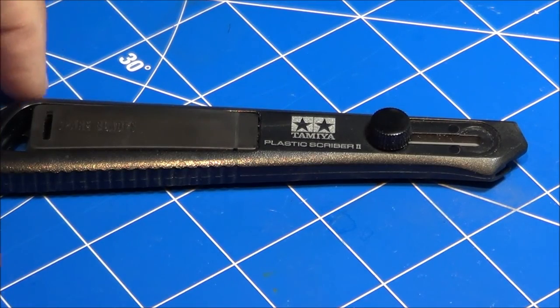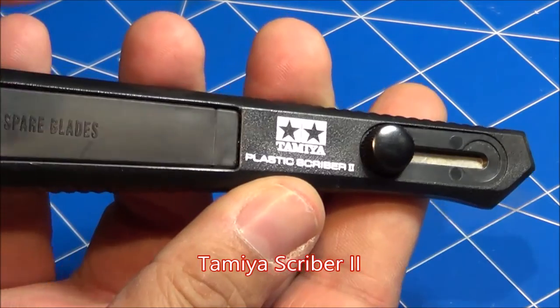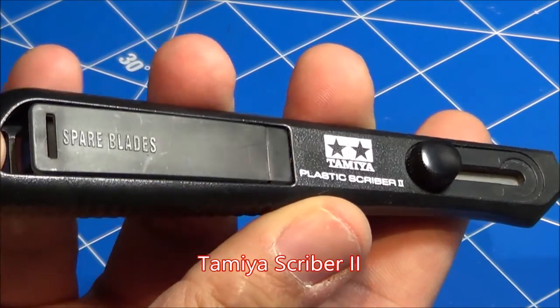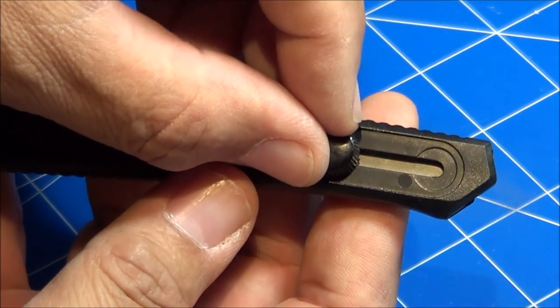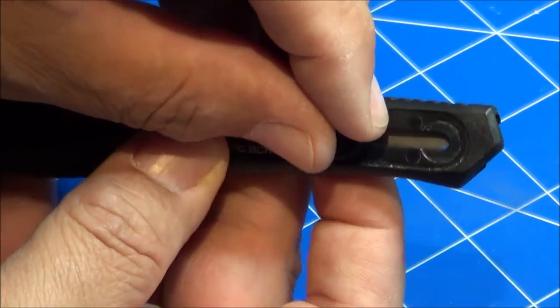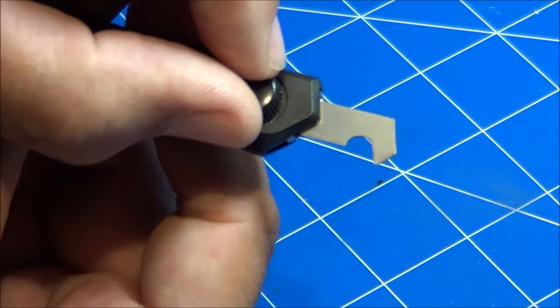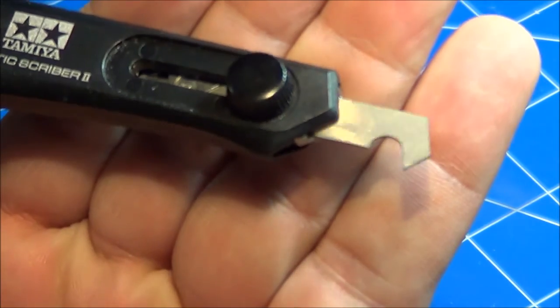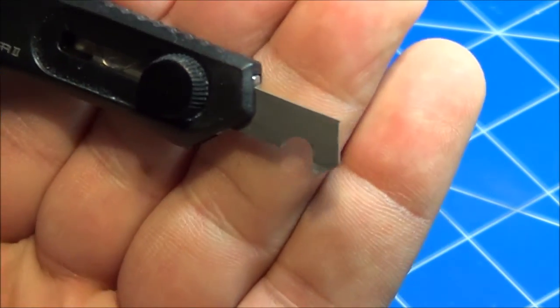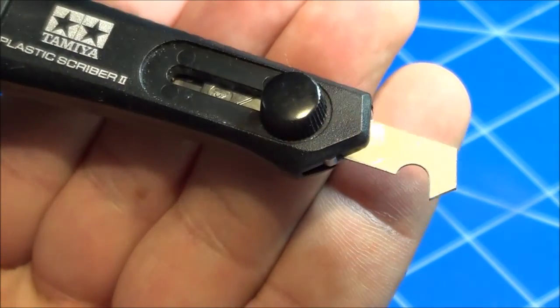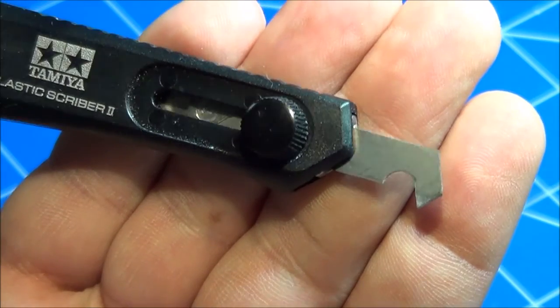Next is the Tamiya scriber, and it's a very handy tool. You have extra spare blades that are contained within the compartment here, and the blade does remain protected when you're not using it. Simply push it out, tighten down the set screw, and there you have it. You have a nice razor sharp blade. Once again, you can pull or you can push to engage and make your new panel lines.